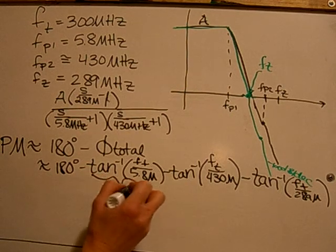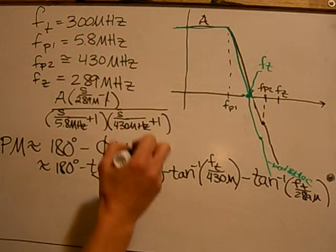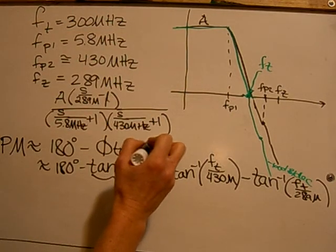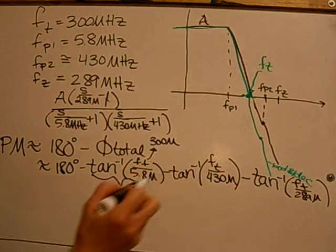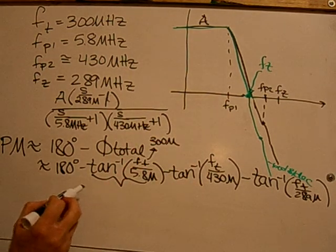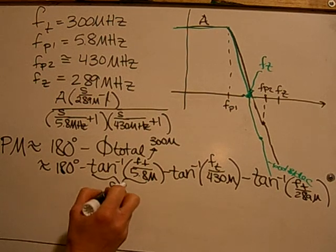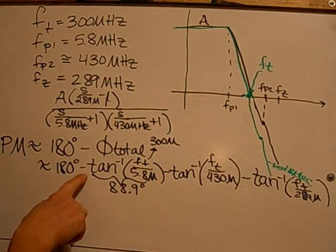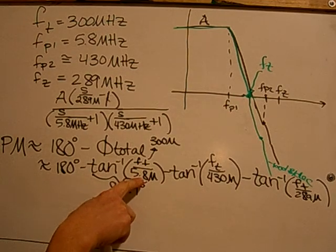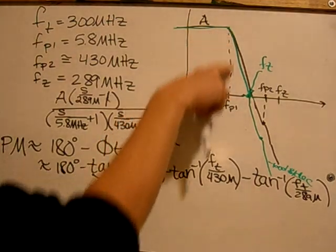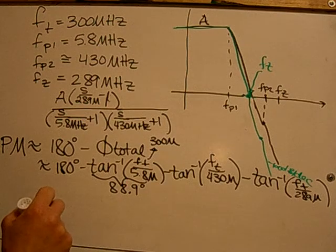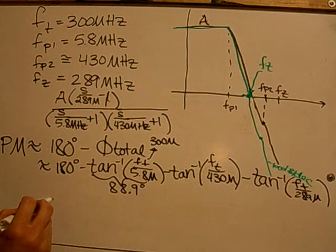So calculating this out with F of T at 300 MHz, this gives a value of 88.9, and this is always going to be the case where Fp1 will always be a lot less than F of T, so it will be approximately 90.